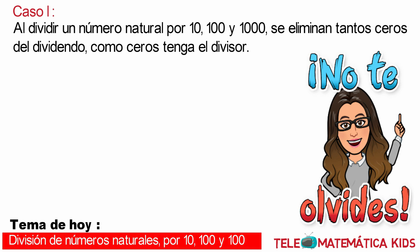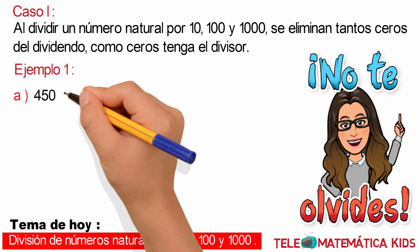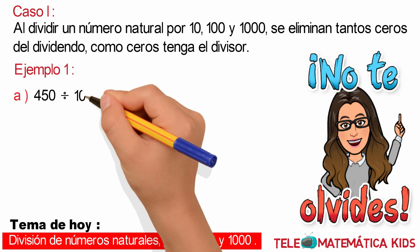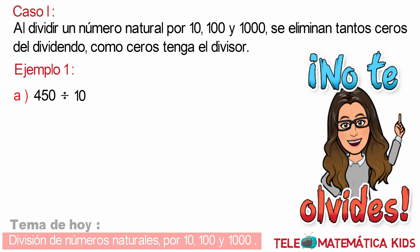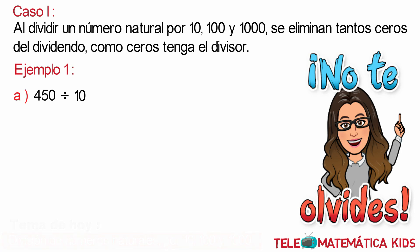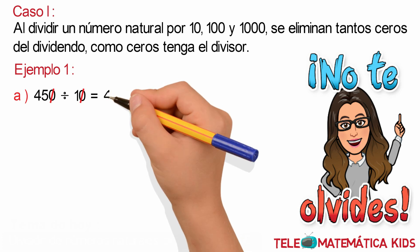Veamos un ejemplo. Literal A: 450 dividido para 10. Aplicando el procedimiento, simplificamos el cero del divisor con el cero de la derecha del dividendo y nos quedaría como resultado 45.